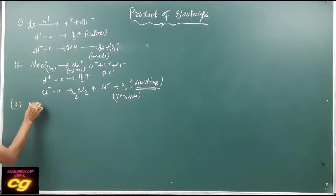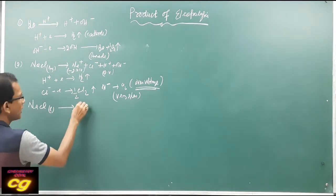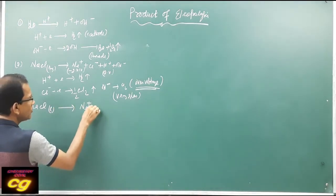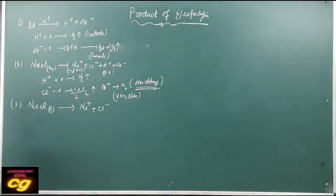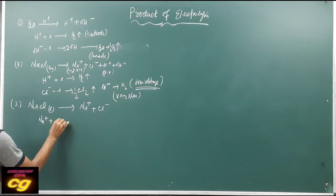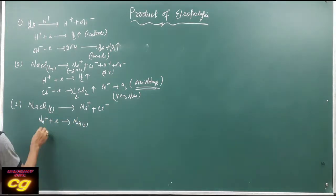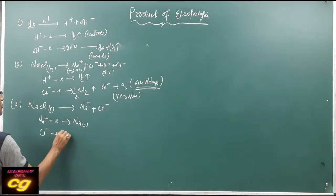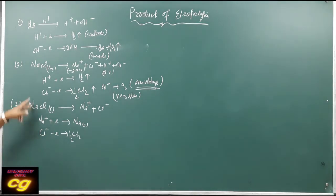If you use sodium chloride in molten (liquid) form, it produces only Na+ and Cl− ions — there are no H+ or OH− ions. As a result, Na+ moves toward the cathode and produces sodium metal, while Cl− is converted to Cl2 at the anode. This is the result for molten sodium chloride, compared to aqueous sodium chloride.